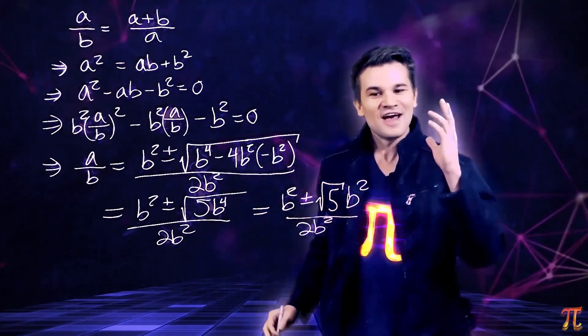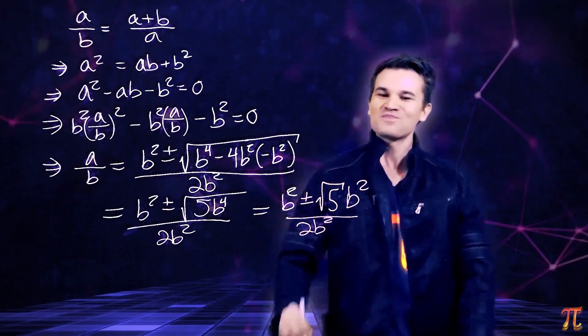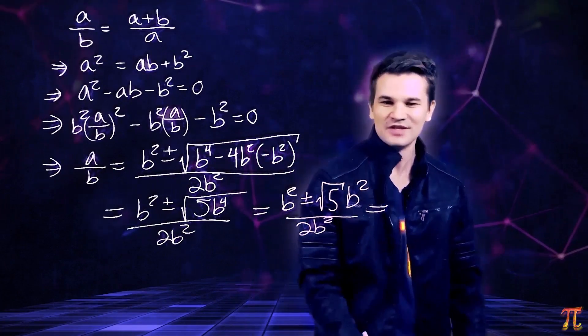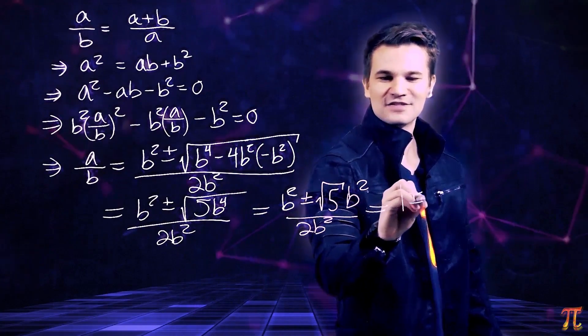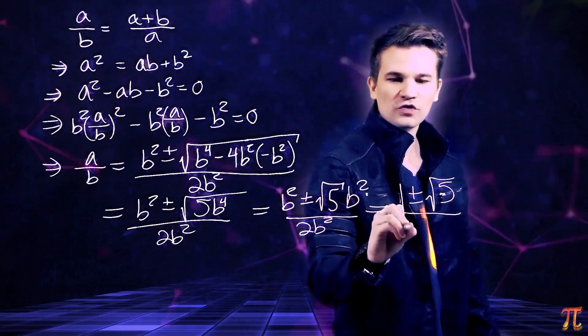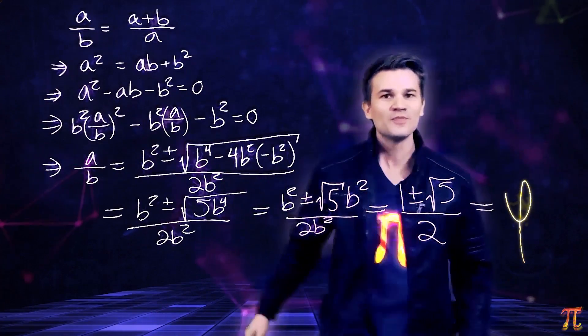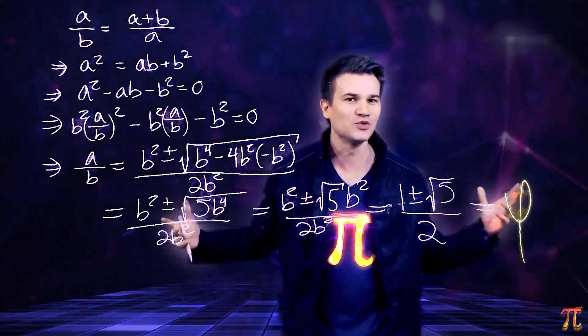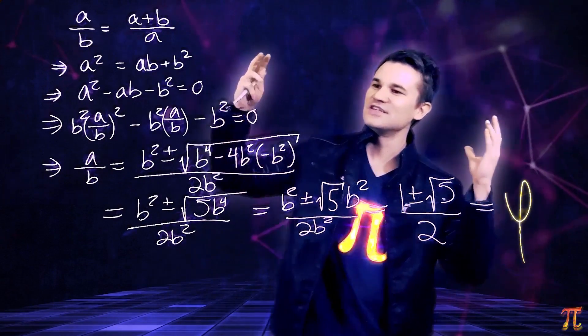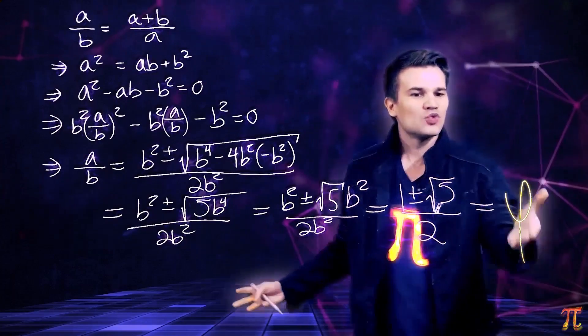And that is how you derive the golden ratio without cheating and letting b be whatever the hell you want. So now you've seen the one true way to derive the golden ratio. We didn't make any unnecessary or unfounded assumptions, we just went with the purest method.